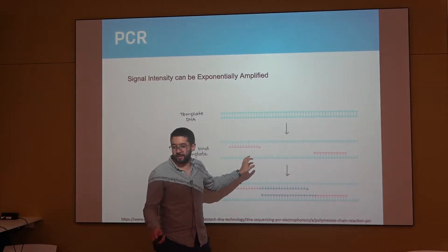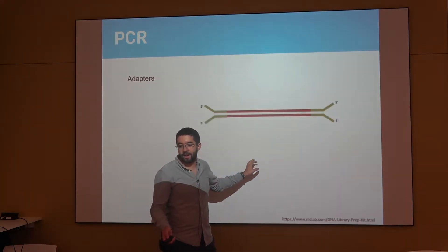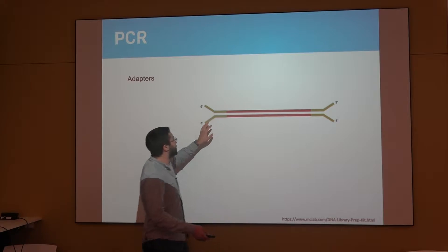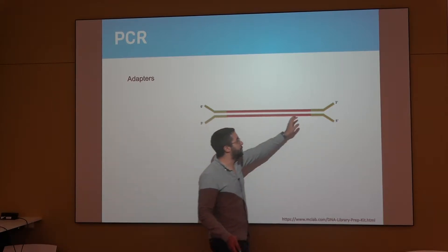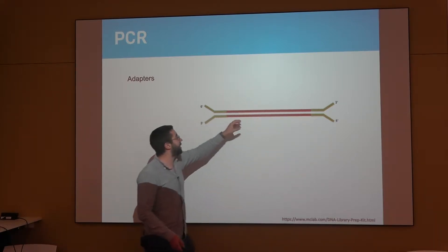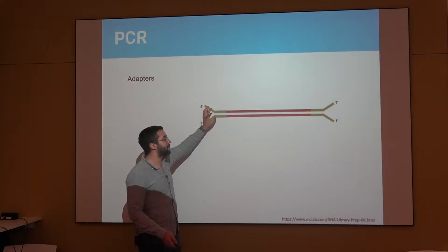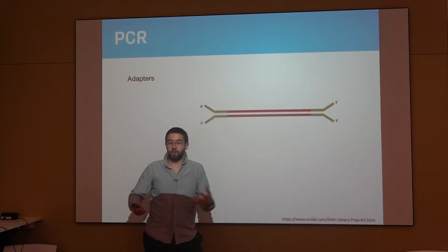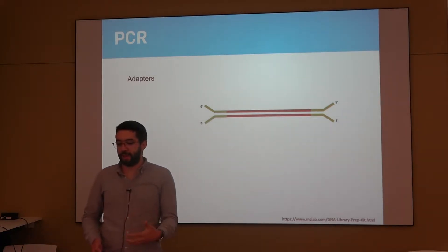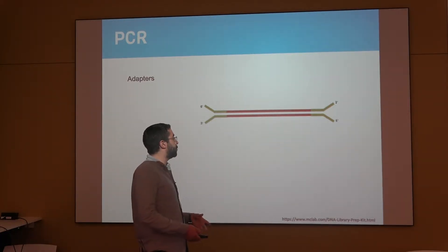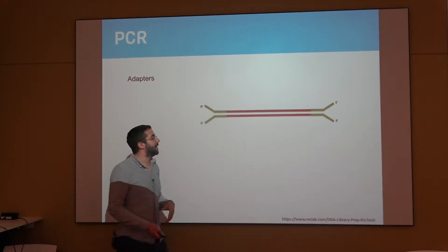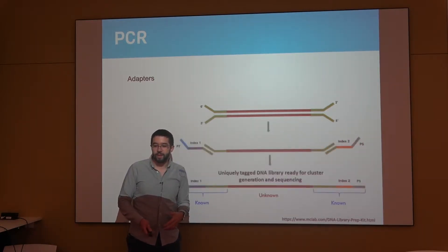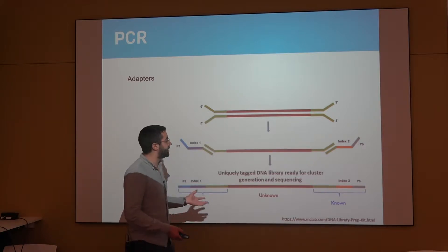So one way to deal with this is to add adapters. So you can have your unknown piece of DNA coming from the cell and then you can add a specific piece of DNA, a shorter one, on both ends that you created that you know very well what it's made of. And there's very smart ways to use these adapters that biochemists and biologists come up with.